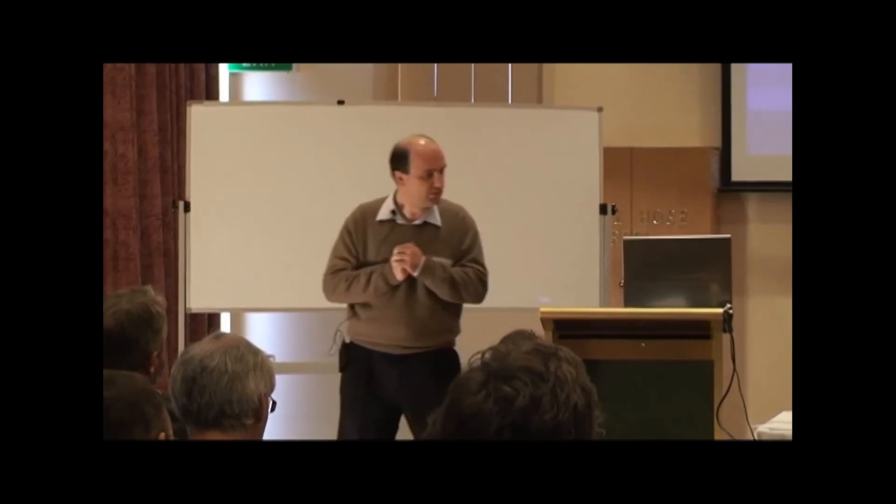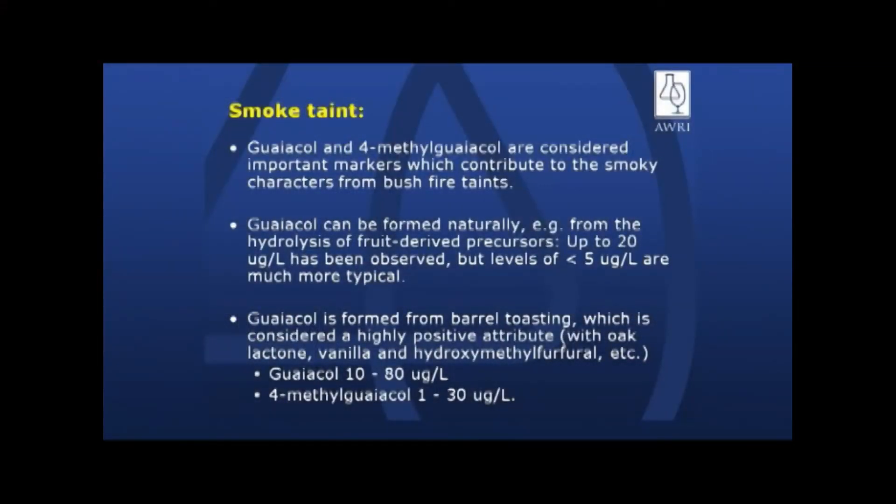Not only is it in oak, but it can be formed naturally as well. So in a Merlot juice which the Institute was involved with, you can have natural levels of guaiacol. It's really nothing to do with oak aging. Depending, it can be less than five, it can be up to 20 micrograms per liter.